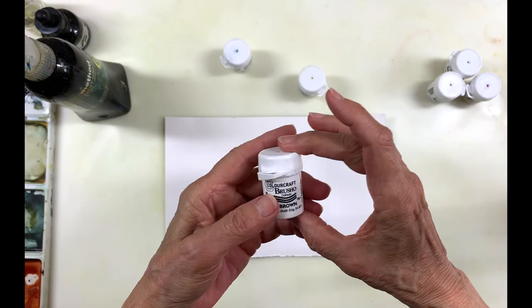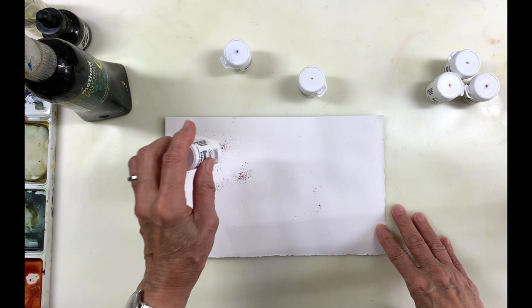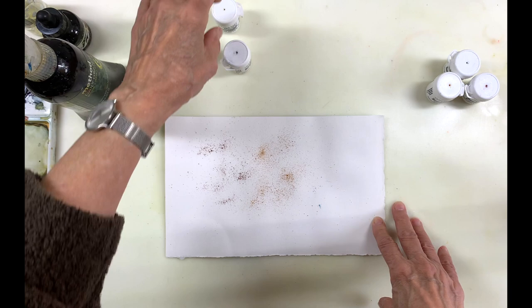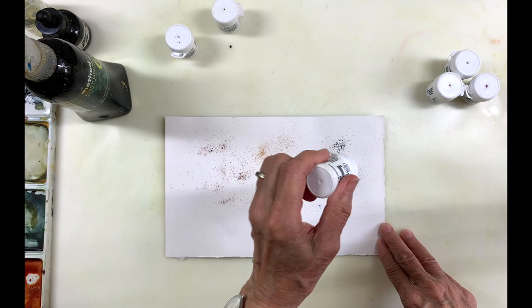So I'm going to show you how I experimented with them. And so I'm just putting down some of the four colors, actually, the moss, the dark brown, the moss green, new gamboge, and the gray, and just spattering it on dry paper.